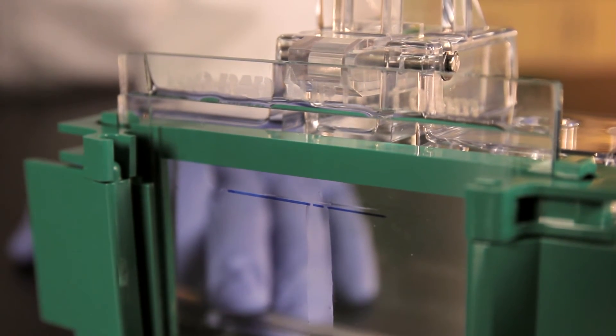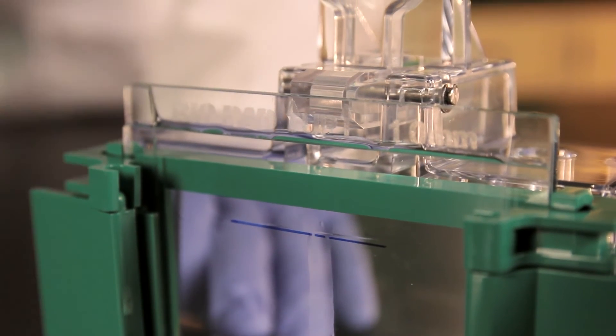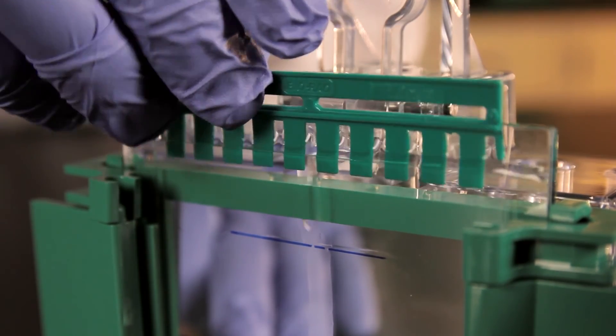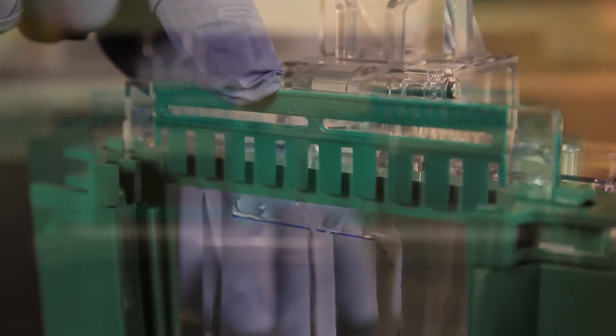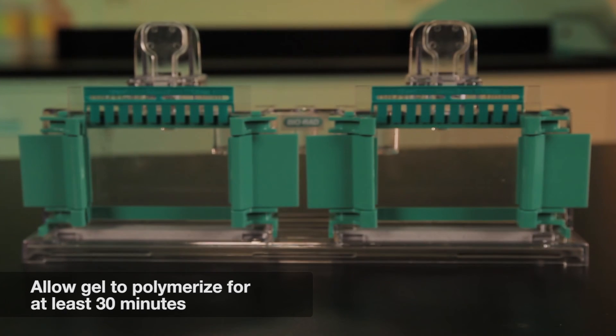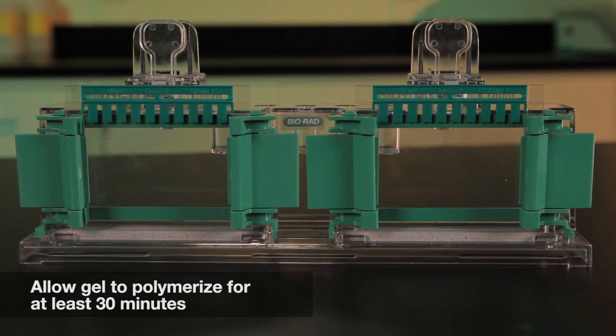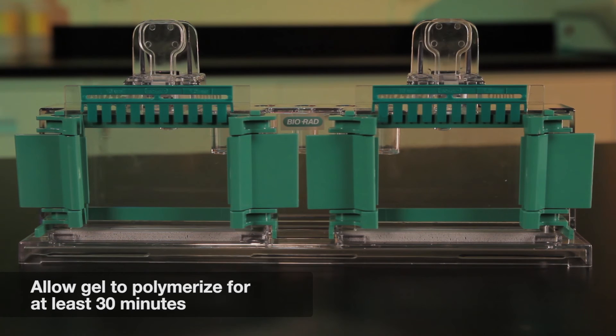Next, insert the comb into the cassette, taking care to avoid trapping air bubbles under the teeth. Allow the gel to polymerize for at least 30 minutes. You are now ready to run your Bio-Rad TGX FastCast gel.